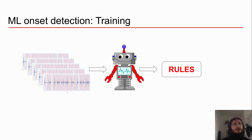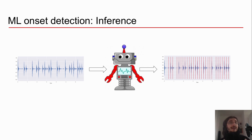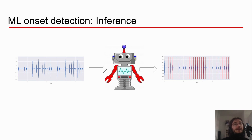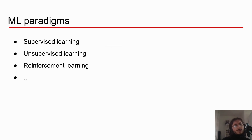This is only half of the machine learning process and workflow. We first train a machine learning system, and then we use it for inference. In an inference setting, we provide the system with a new waveform it has never seen before, and hopefully the machine learning model will identify all the onsets we need. This is the main difference between a machine learning approach and a traditional AI approach based on expert rules.